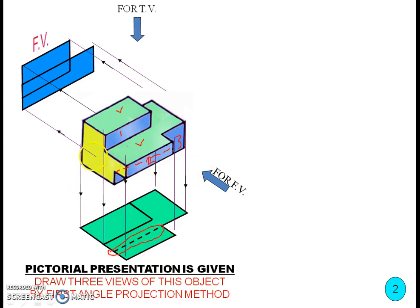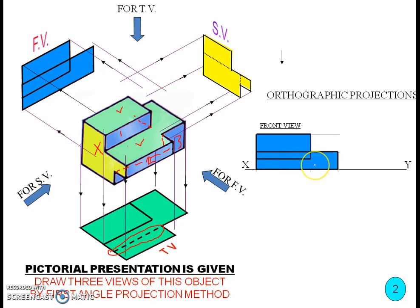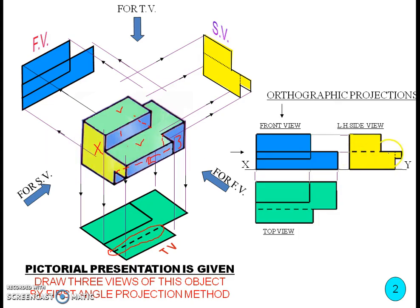When considering the side view, we can only see one plane, but there are two hidden edges — one edge exactly below a visible edge, and another edge that we cannot see. These two hidden edges must be represented in the side view. In the orthographic projection, the hidden edges are shown as dashed lines in the left side view and in the top view.